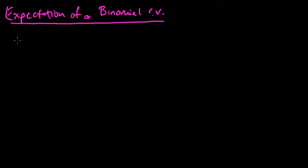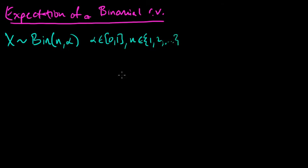So a binomial random variable, we write X is binomial or BIN with parameters N, alpha. Sometimes we'll put P here. Alpha is the probability, some number between 0 and 1, and N is a positive integer: 1, 2, 3, etc.